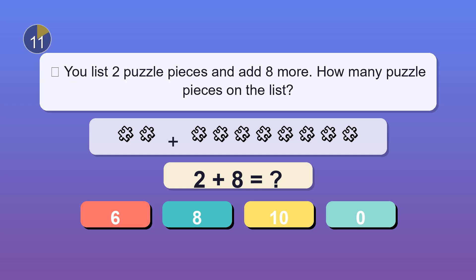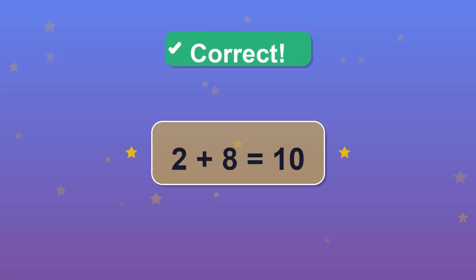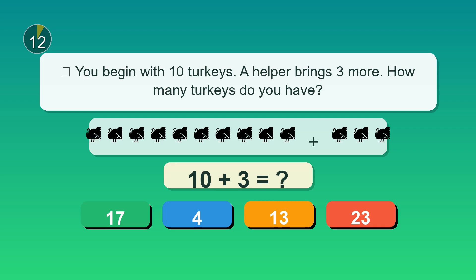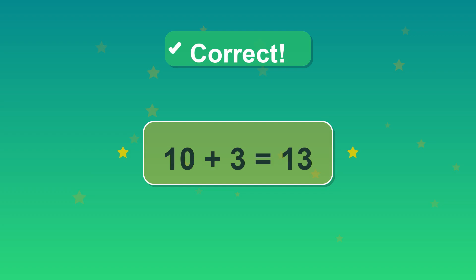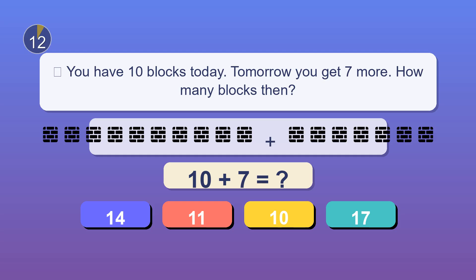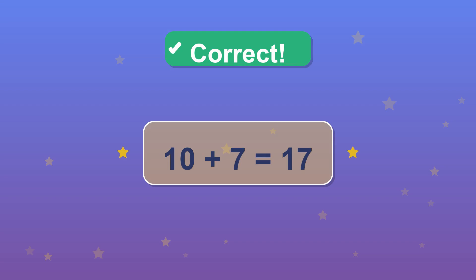You list two puzzle pieces and add eight more. How many puzzle pieces on the list? Yep. Ten. You begin with ten turkeys. A helper brings three more. How many turkeys do you have? Boom. 13. You have ten blocks today. Tomorrow you get seven more. How many blocks then? That's correct. 17.